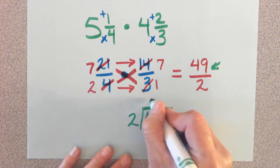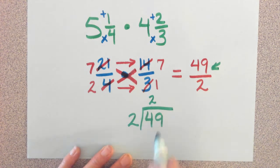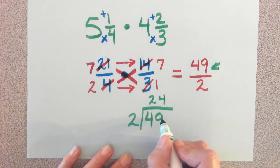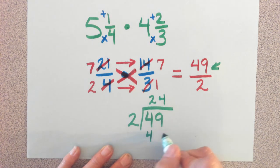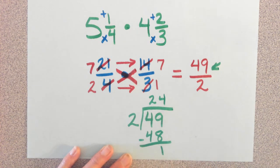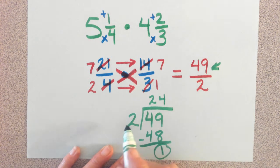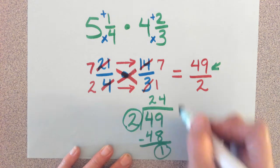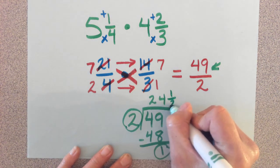So two goes into four twice. Two goes into nine four times. And that will give us forty-eight. When I subtract, how much do I have left over? One. Take that one, put it over your outside two, and that is your fraction.